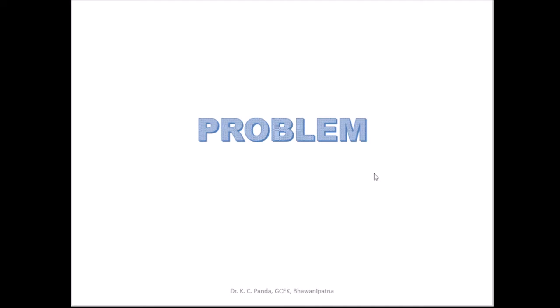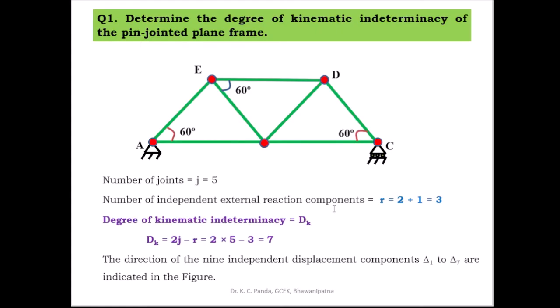Coming to the first problem: determine the degree of kinematic indeterminacy of a pin-jointed plane frame with joints A, B, C, D, E, where support A is a hinge support and support C is a roller support. Using the formula dk = 2j − r, we find the number of joints j = 5, and the number of independent external reaction components: hinge support gives 2, roller support gives 1, so r = 3.